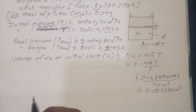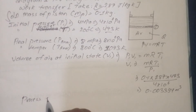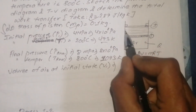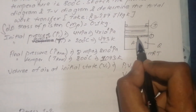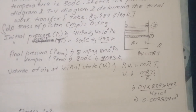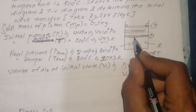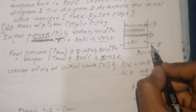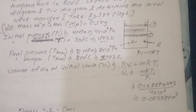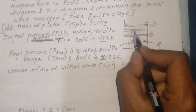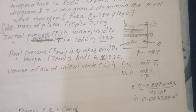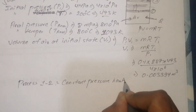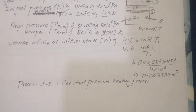Now identifying the process: there is no single process here. Basically we go through steps — a second step and a third step. The process involves a constant pressure eating process. This is a constant pressure heating process.